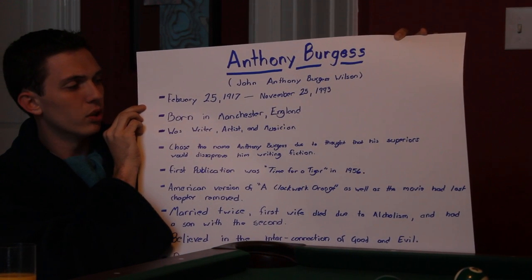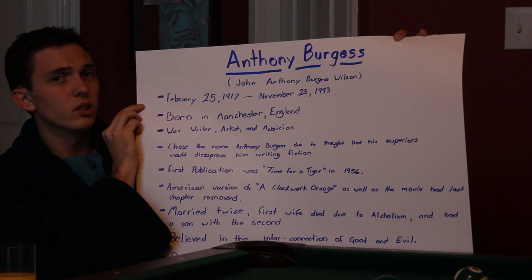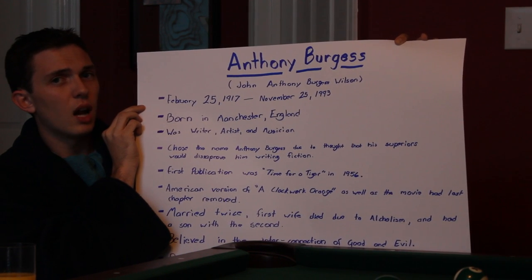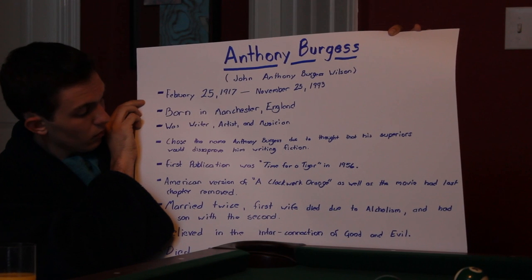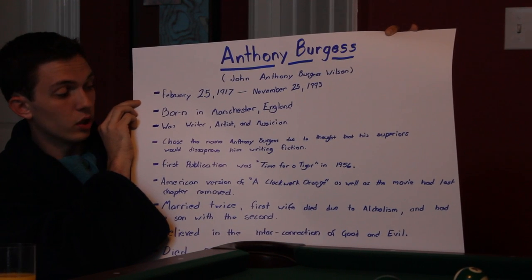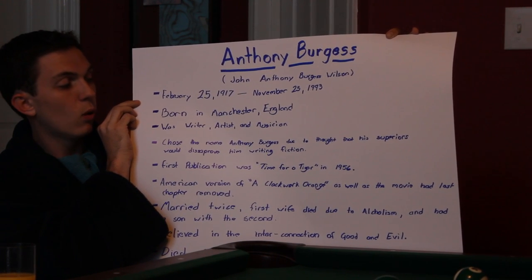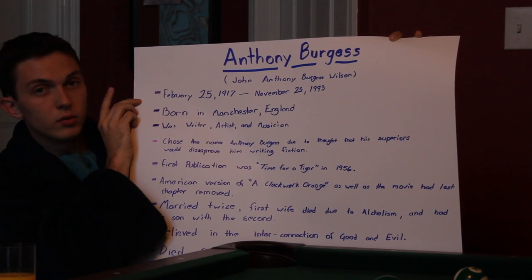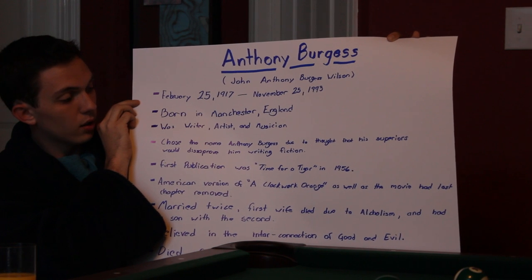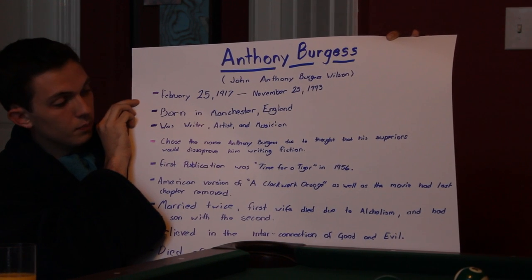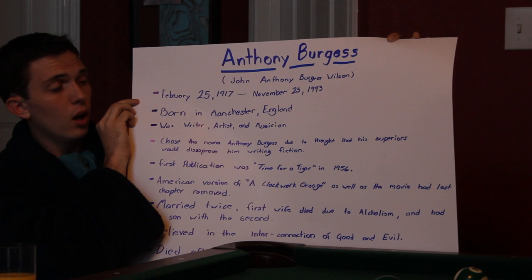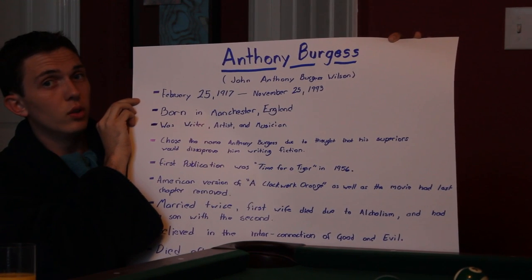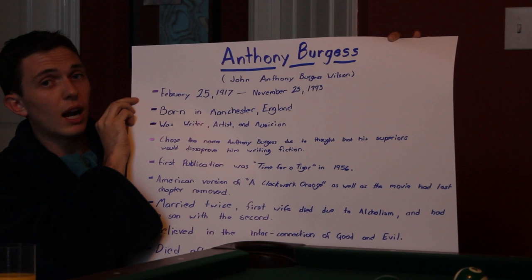He chose the name Anthony Burgess due to the thought that his superiors might disapprove of him writing fiction while he spent his time in the armed forces. His first publication during that time was Time for a Tiger in 1956. In the work that we are talking about, A Clockwork Orange, the American version and the movie took out the final chapter, which Anthony Burgess did not approve of, due to the fact that it gave the main character Alex redemption.